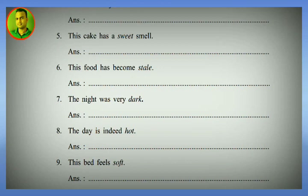Number six: 'This food has become stale' — predicative use. Alternative attributive form: 'This has become stale food.' Number seven: 'The night was very dark.' Alternative: 'It was a very dark night.'